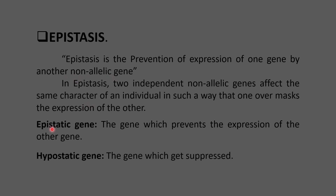There are two important terminologies to remember. The first is the epistatic gene — this is the gene which prevents the expression of the other gene. These are non-allelic genes. The gene whose expression gets suppressed is called the hypostatic gene.